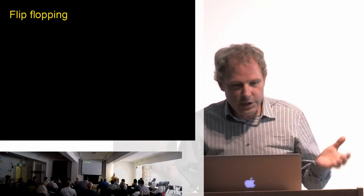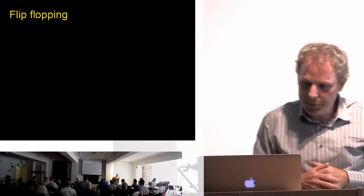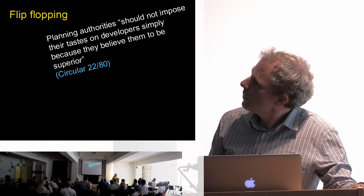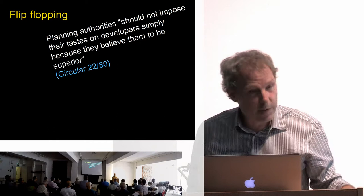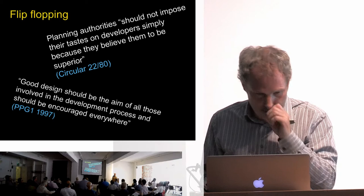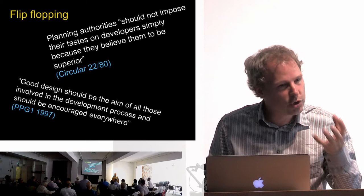In the intervening years, we've seen a lot of flip-flopping in policy around design at the national scale. Different policy instruments have superseded and updated old ones. Sometimes the tone has been more discouraging, like the famous Circular 22/80: 'Planning authorities should not impose their tastes on developers simply because they believe them to be superior.' Sometimes it's been more encouraging: 'Good design should be the aim of all those involved in the development process and should be encouraged everywhere.' PPG1, 1997. Throughout, those four principles have more or less held sway, and we can trace them through to the NPPF that we see today.